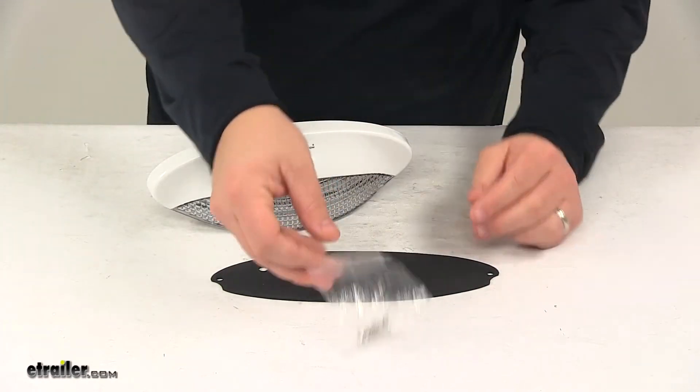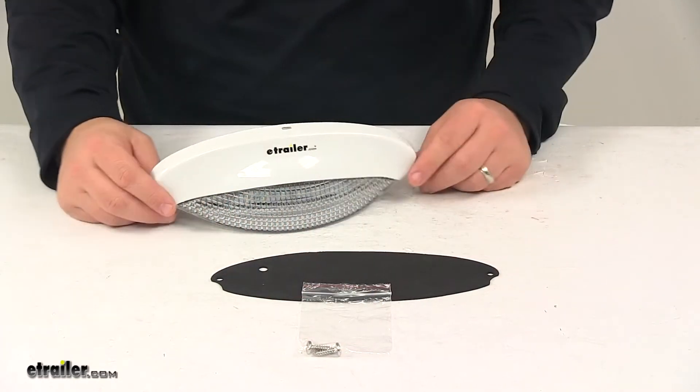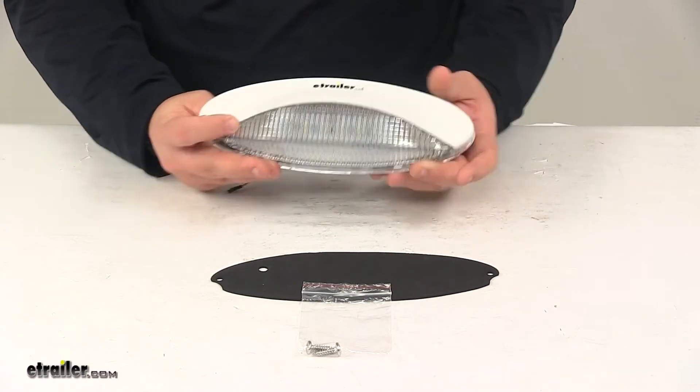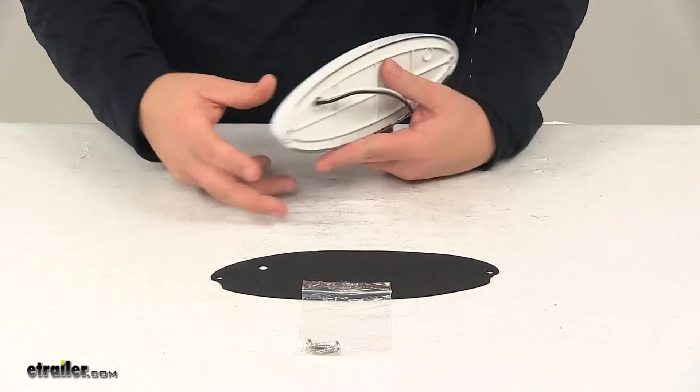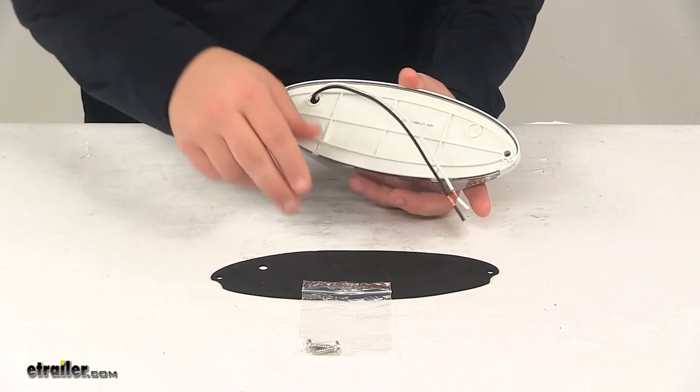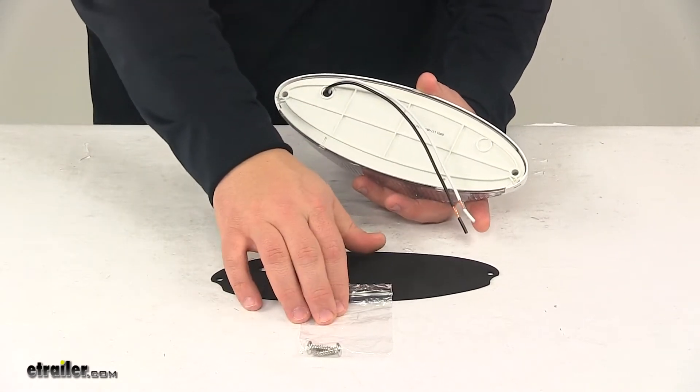It also comes with the mounting hardware necessary to get it installed. You just pop off this white plastic piece, gain access to the mount holes and install it that way. It is a surface mount installation and once again mounting hardware is included.